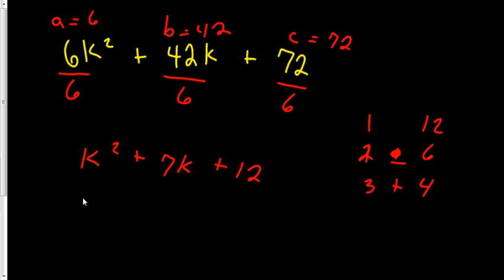So it's going to be K plus 3 and K plus 4. K times K is K squared. K times 4 is 4K. 3 times K is 3K, so those added up equals 7K. And then 3 times 4 is 12. There we have it. Factor it out and done.